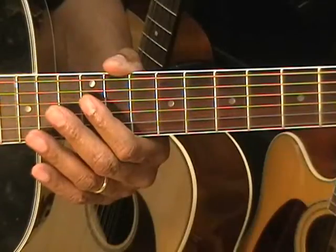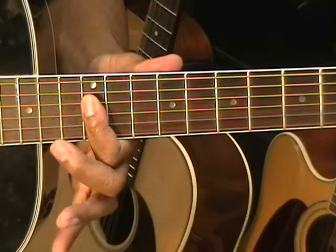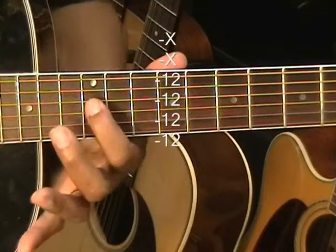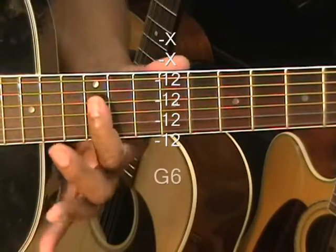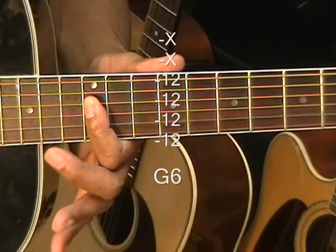For the next chord, we're going to go up to the 12th fret for a G6. We're holding down the D string and everything below it. Just barring that. And that's a G6.